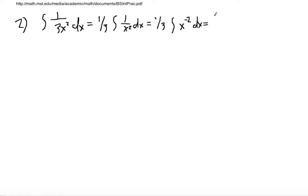This 1/3 stays outside, and now when you take the integral you're going to add 1 to the power. Remember, negative 2 plus 1 is negative 1, and then out in front you're going to take 1 over whatever this new power is, the new power not the old one.